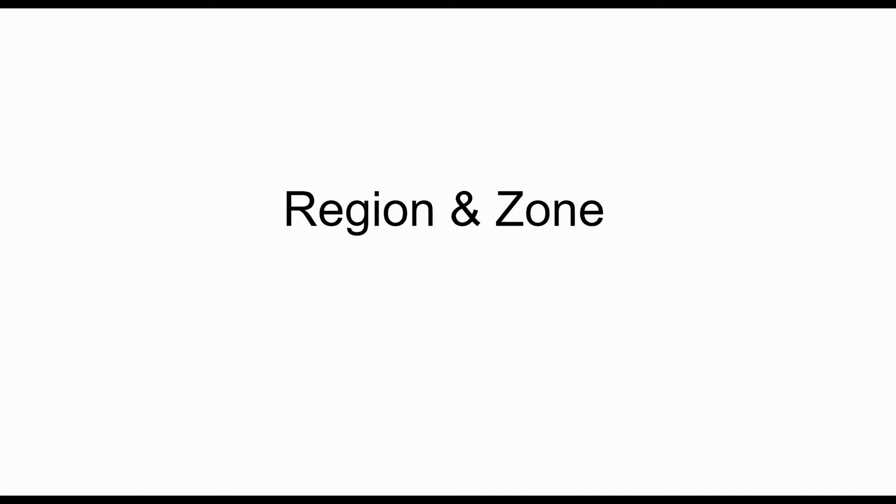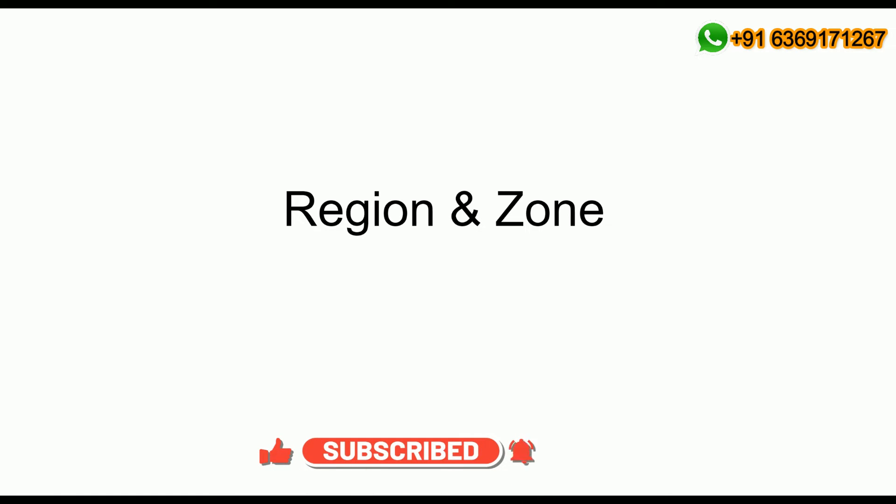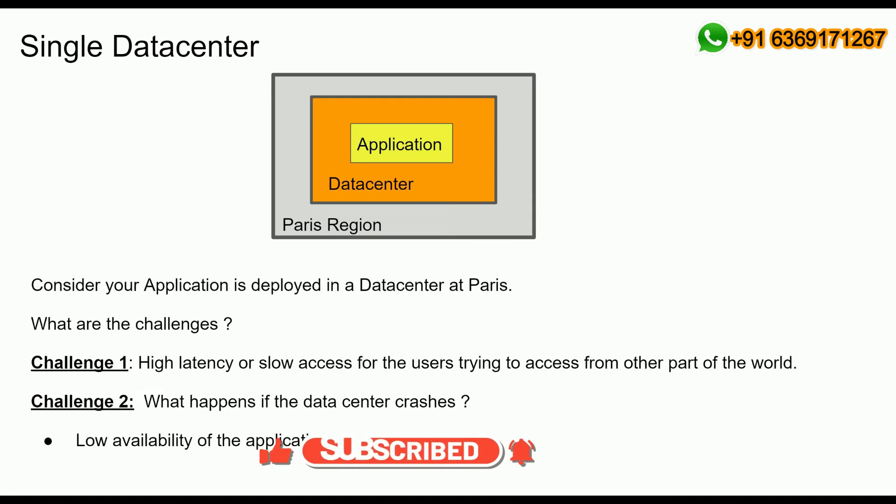Let's understand about regions and zones with a few real-time examples or scenarios. On a very high level, regions refers to a geographical location like India, Australia, Singapore, New York, London, Paris. And zones refers to a data center that is operating within that particular region or geographical location. Let's understand this with examples.